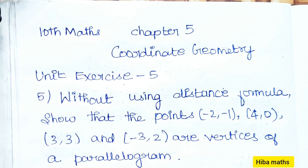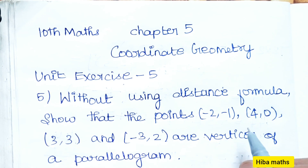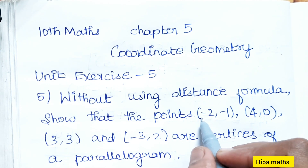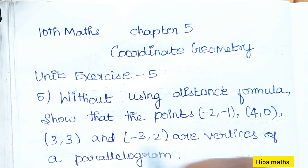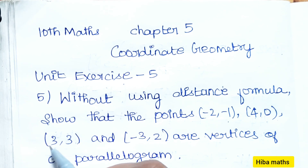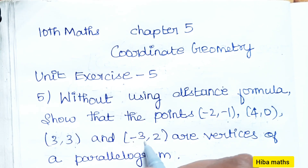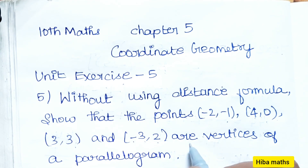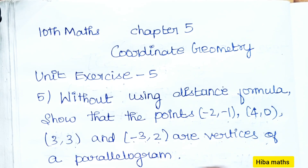Without using the distance formula, show that the points (-2, -1), (4, 0), (3, 3), and (-3, 2) are vertices of a parallelogram.